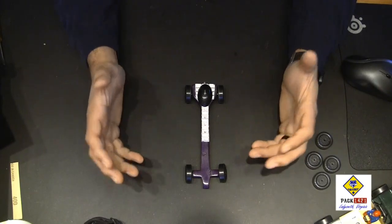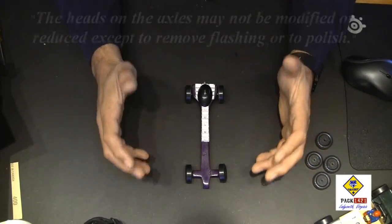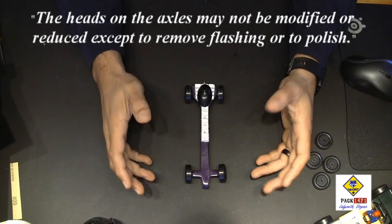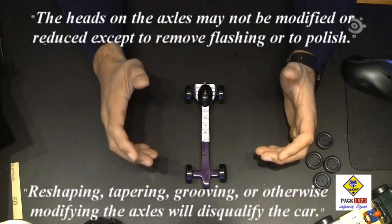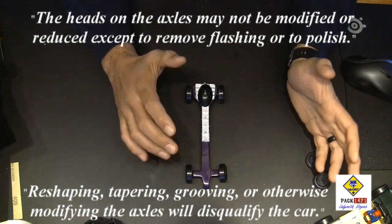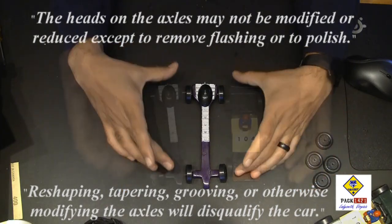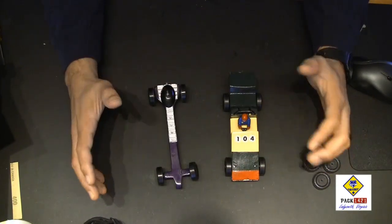So why is this important? In the Scout class, our rules specifically dictate what we can and cannot do to the axles. And one of those things that we cannot do is to bend them. And that's why it makes it very difficult to set up a rail riding car in the Scout class. Having said that, it can be done.